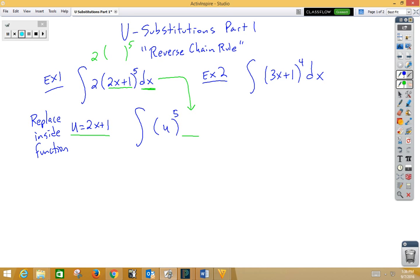The derivative of u with respect to x would be du/dx equals just plain old 2. If we kill the fraction, notice that du is 2dx. Now, if we go back to the original problem, notice we have a 2dx. So we're going to replace that 2dx with our du.